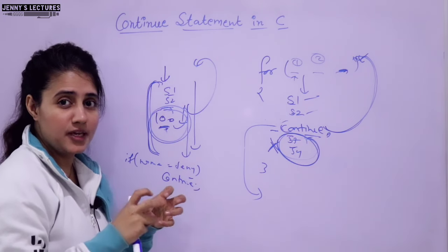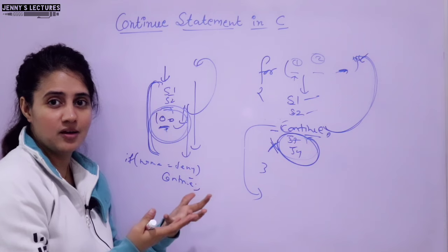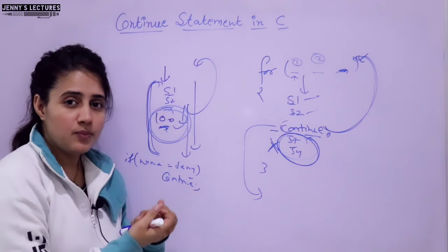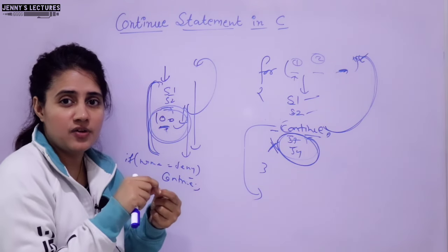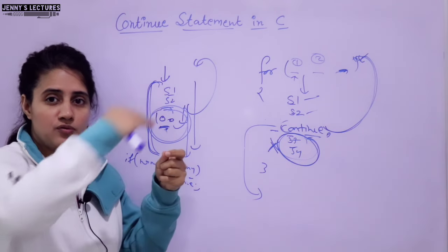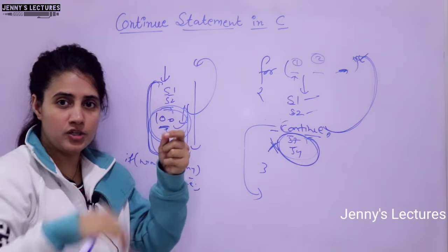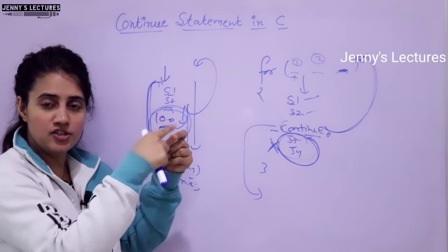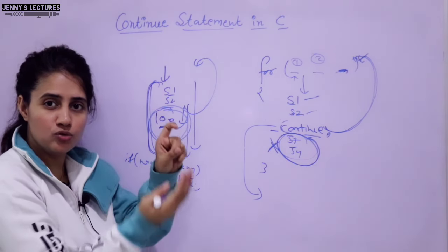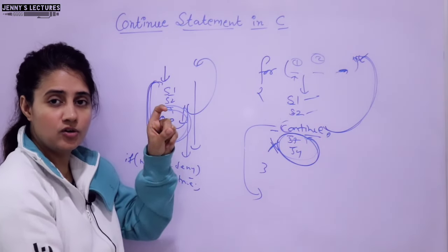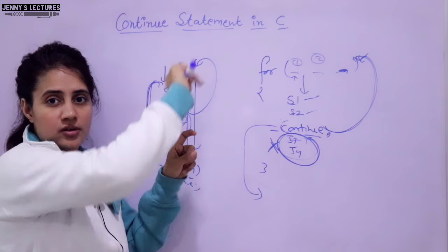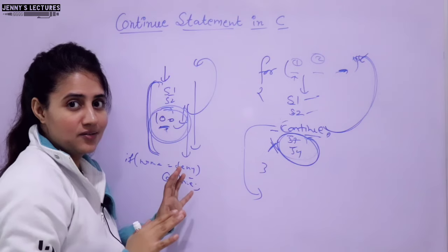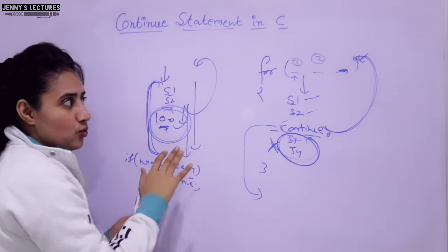I hope you got what is the meaning of this continue statement. Why do we use the continue statement in our program? Suppose a code is very lengthy - 100 lines of code - and because of some condition, if that condition is satisfied, I want to execute 50 lines and skip the other 50 lines. So before those 50 lines, you can put: if the condition is true, then continue. Continue means control is going to skip all 50 lines of code and go directly to the beginning of the loop, meaning the next iteration. Now let us discuss it with the help of proper programming.